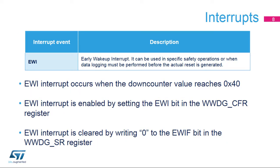The early wake-up interrupt, or EWI, can be used to perform emergency tasks before the reset occurs, such as data logging, data protection, watchdog refresh in order to prevent the reset, or other emergency tasks. The EWI interrupt occurs whenever the down-counter value reaches 0x40. It is enabled by setting the EWI bit in the WWDG CFR register. The EWI interrupt is cleared by writing 0 to the EWIF bit in the WWDG SR register.